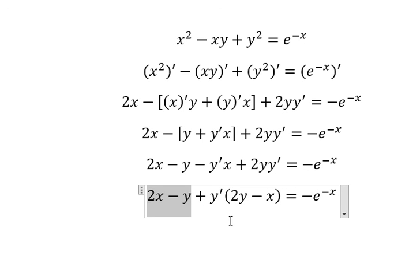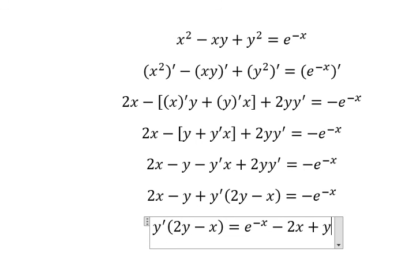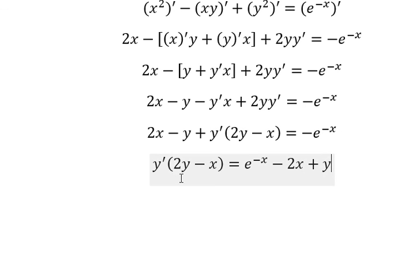We move these terms to the right side, and we get negative 2x plus y. Then we divide both sides by this factor.